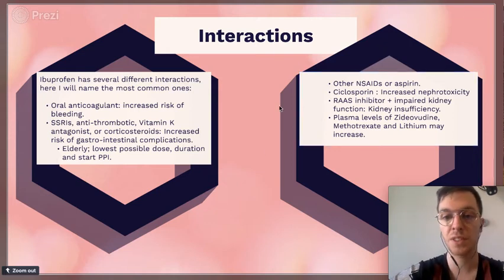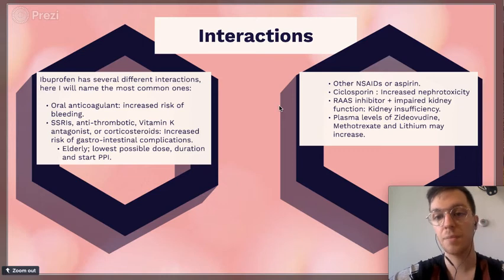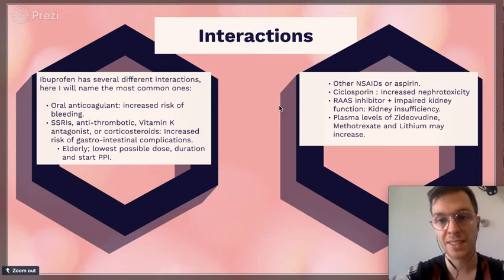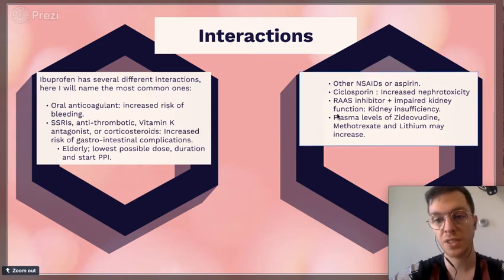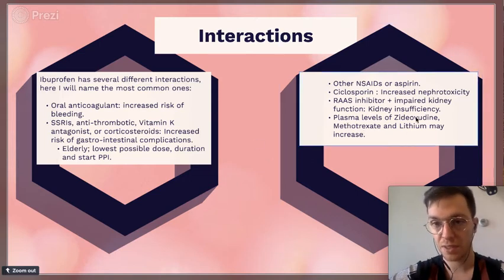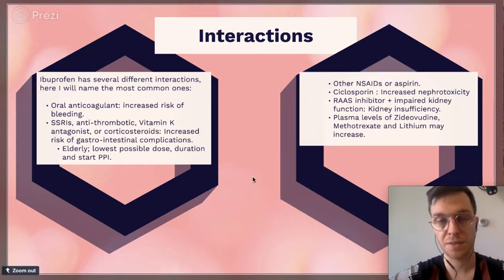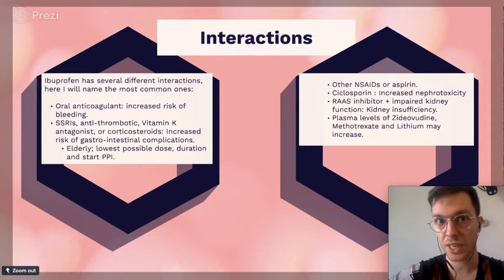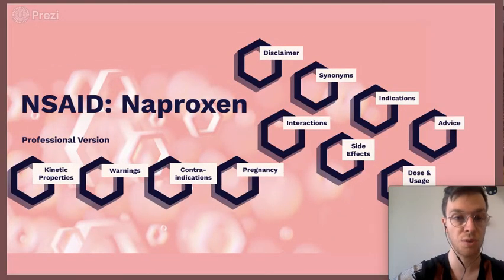When combined with cyclosporin, it may increase nephrotoxicity. When combined with a RAS inhibitor in a patient with impaired kidney function, it may worsen kidney insufficiency — so please be careful. When combined with methotrexate or lithium, the plasma levels of those medications may increase, so consider lowering their doses accordingly.